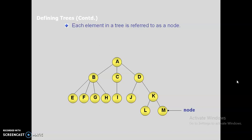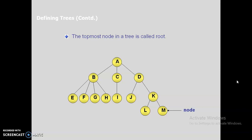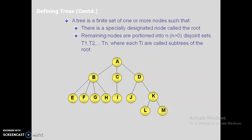Each element in a tree is referred to as a node — nodes A, B, C, D up to M. The topmost node in a tree is called the root. A tree is a finite set of one or more nodes such that there is a specially designated node called the root, and the remaining nodes are partitioned into n greater than zero disjoint sets T1, T2, ..., Tn, where each Ti is called a subtree.